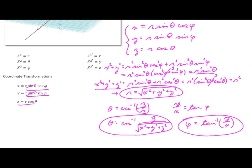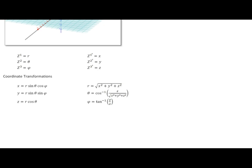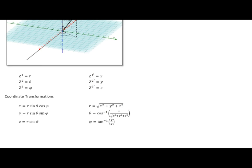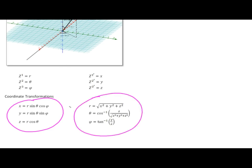This shows how you can start with the forward transformation equations and algebraically determine the inverse relationships without going back to the diagram for more geometry or trigonometry. We now have the complete transformation for spherical polar coordinates: x, y, and z as functions of r, theta, and phi; and r, theta, and phi as functions of x, y, and z.